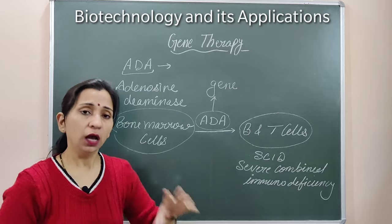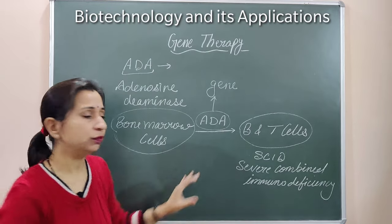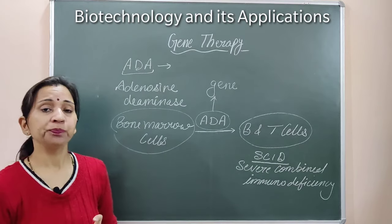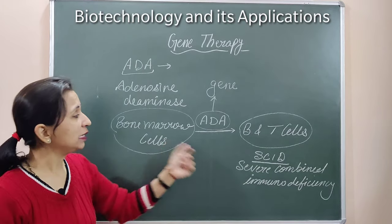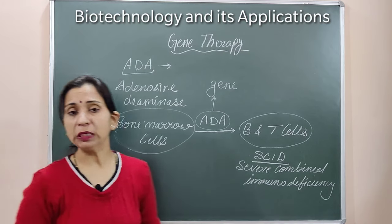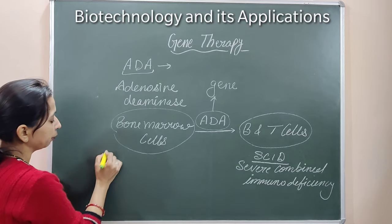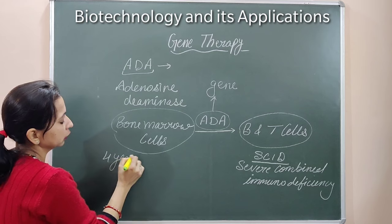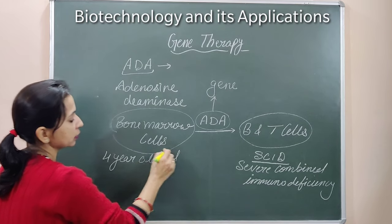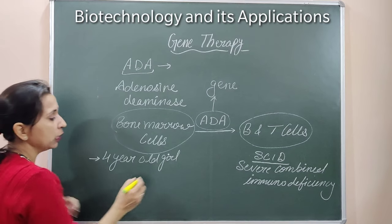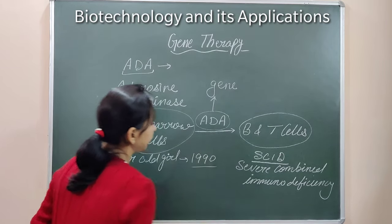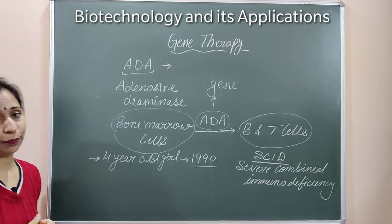This type of condition where the immune system is not properly working is known as SCID — Severe Combined Immunodeficiency. This condition arises due to the absence of the ADA enzyme. To treat this ADA deficiency, the first gene therapy was done in a four-year-old girl in 1990.